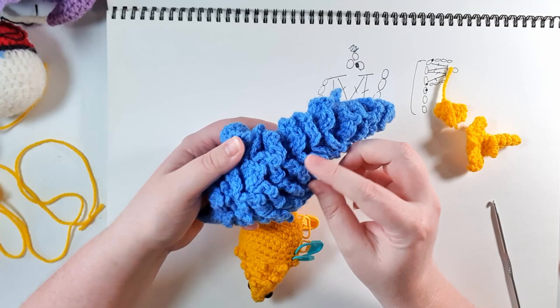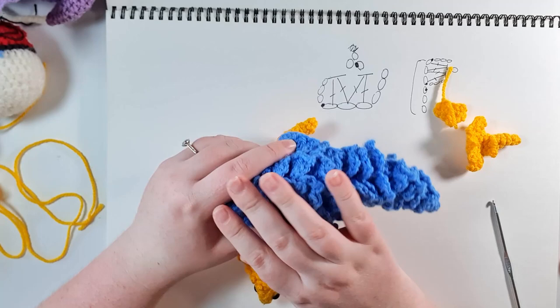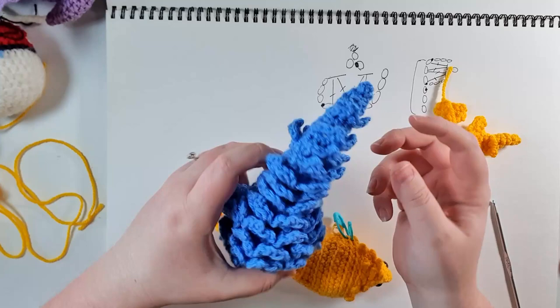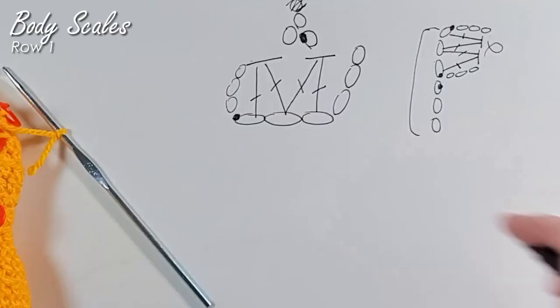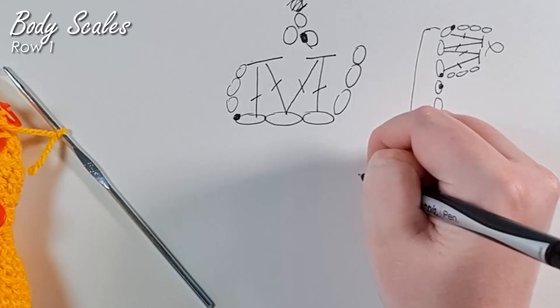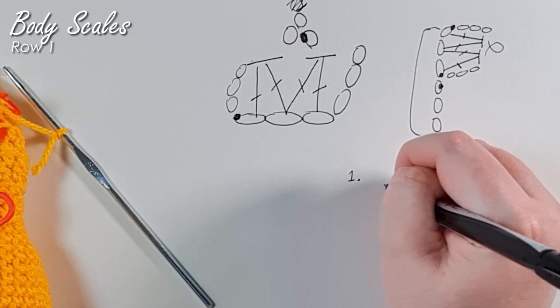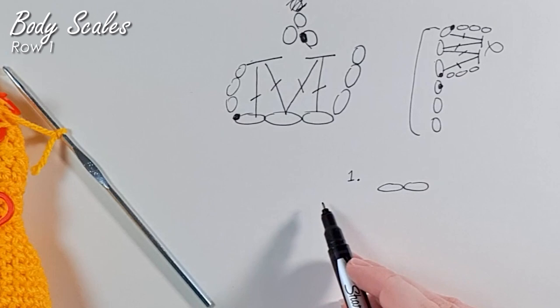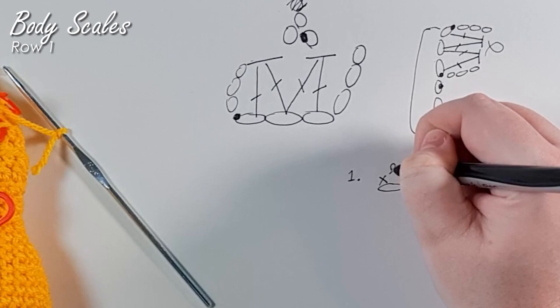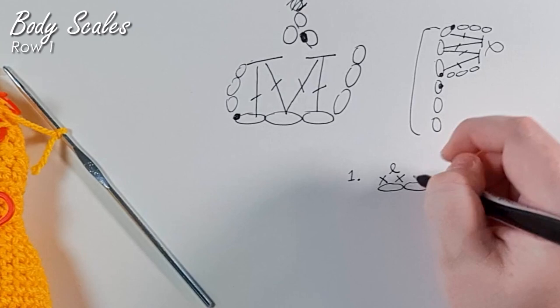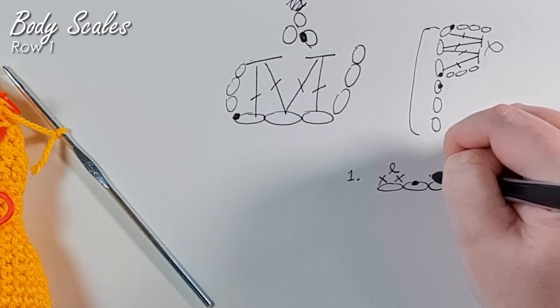We're going to start with the ones here at the tip of the tail. This first row of scales should be relatively easy — they are completed over just two of our front loops. How it works: we're going to put a single crochet, then a picot, and then a single crochet in the same stitch, then slip stitch into the next stitch, and repeat that across. We should have seven front loops around to work into, and we are going to pick the six that sit across the top.